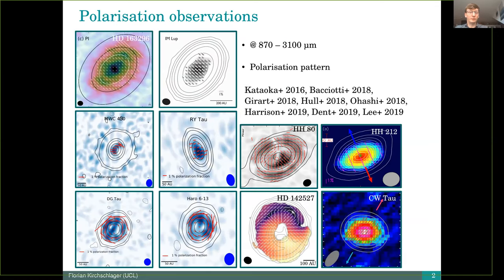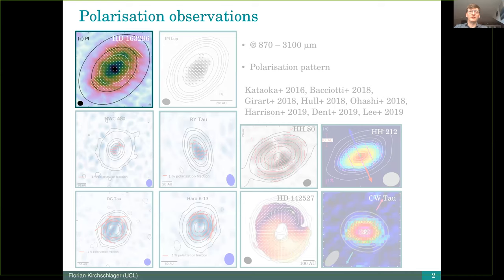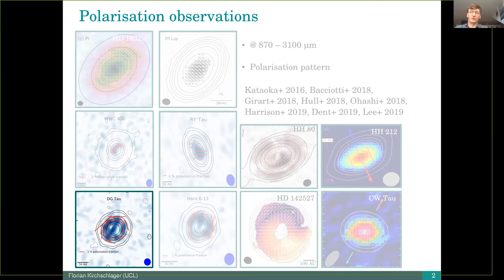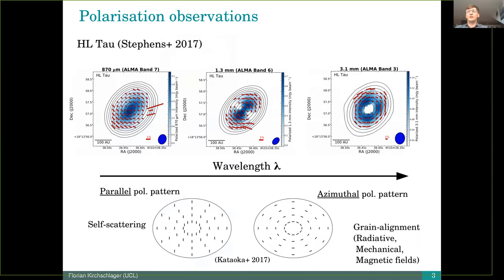ALMA has observed many protoplanetary disks and star-forming regions in the last couple of years and detected different polarization structures and polarization fractions. In general, the polarization structures can be distinguished in two cases. The first one is that we have a parallel alignment of our vectors and the second one is that we have an azimuthal alignment. Here concentric rings, they could also be radial aligned. These two structures can be visible in the same disk at different wavelengths.